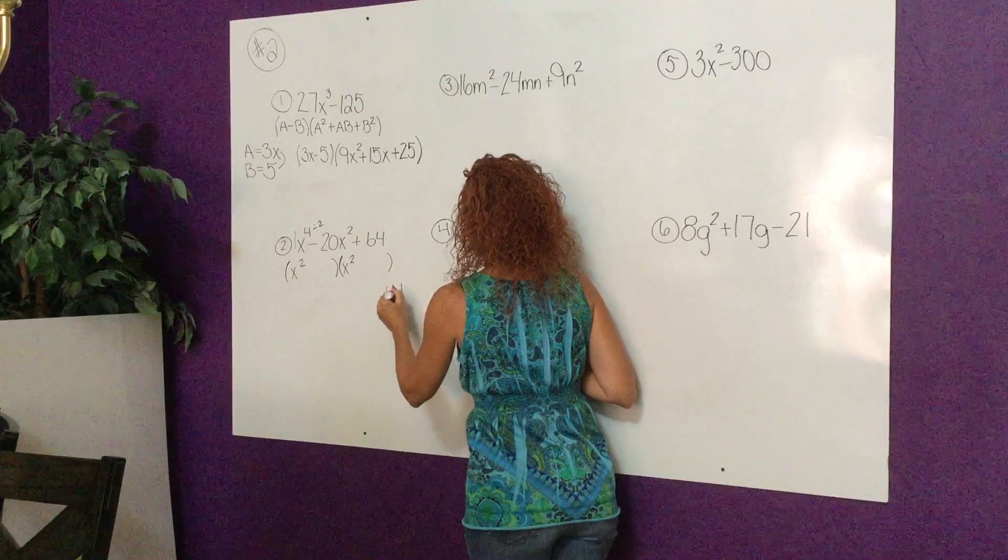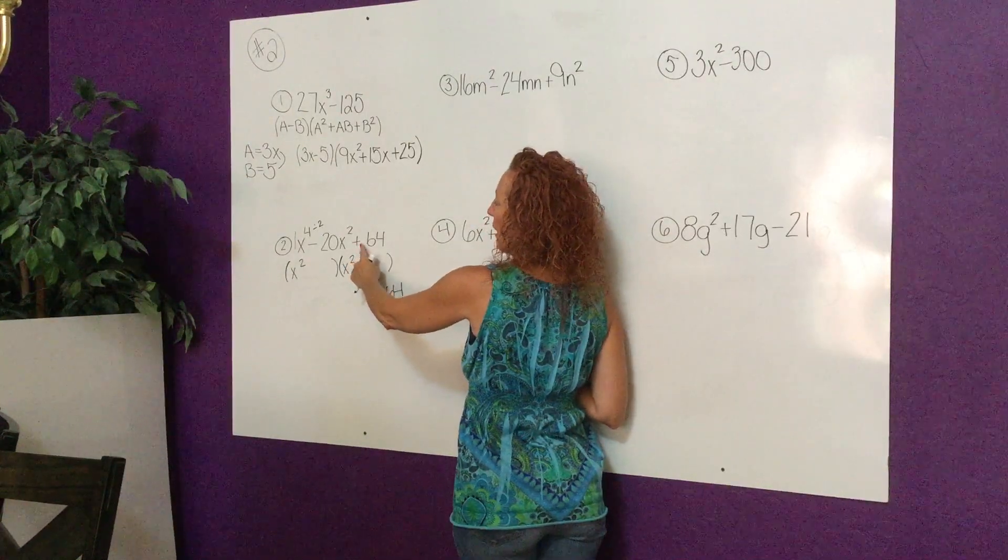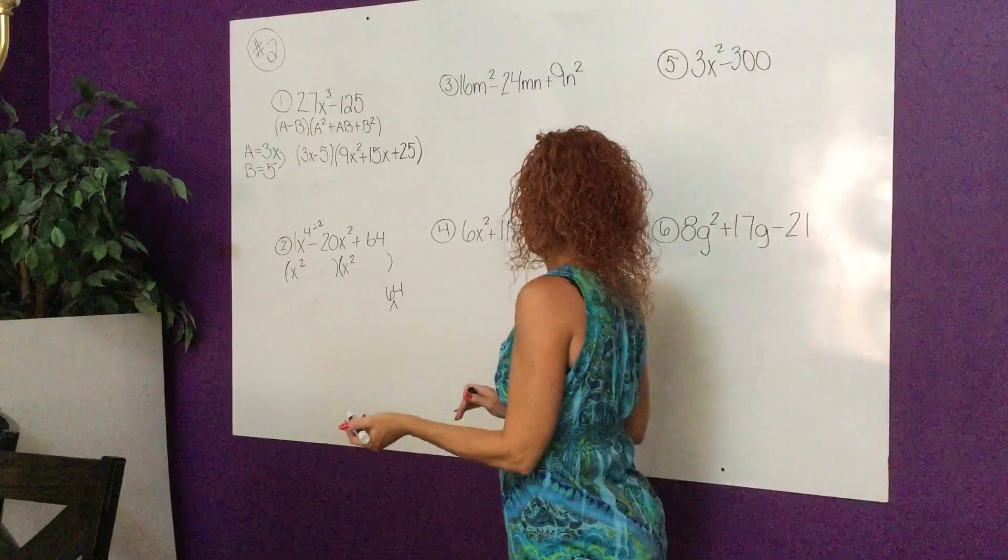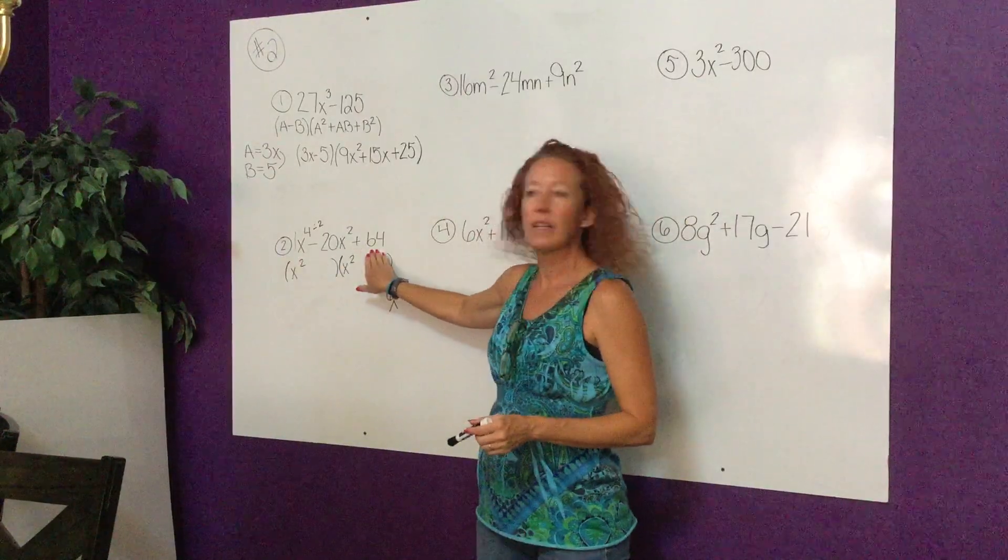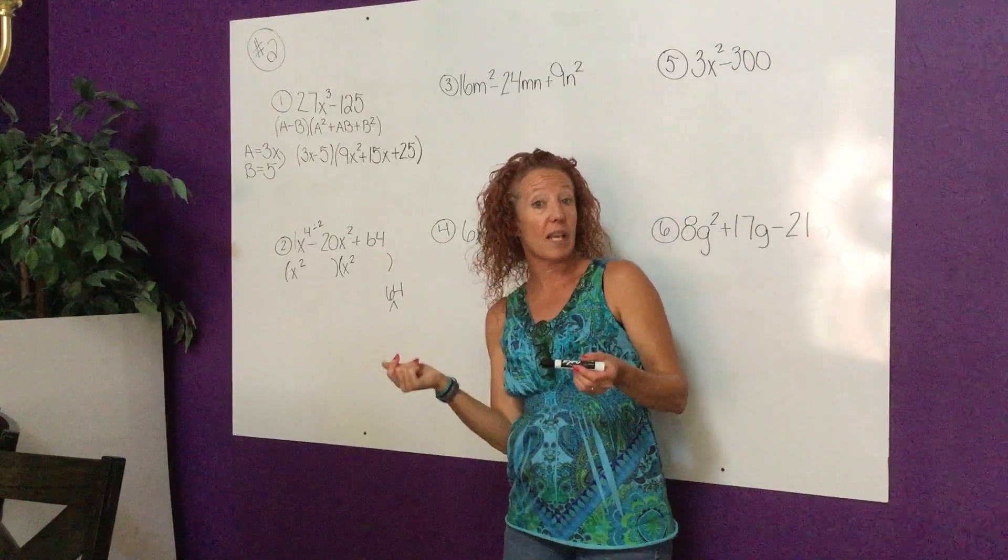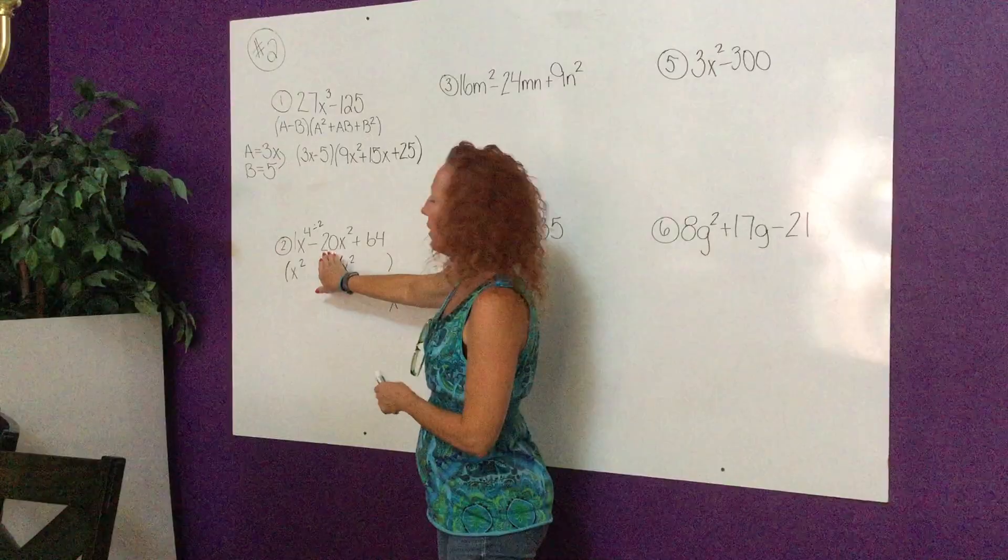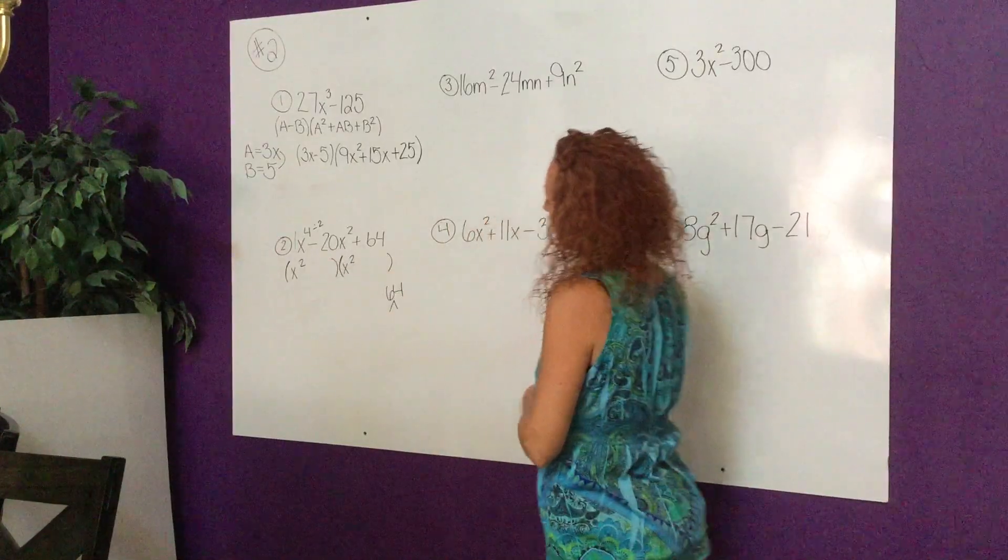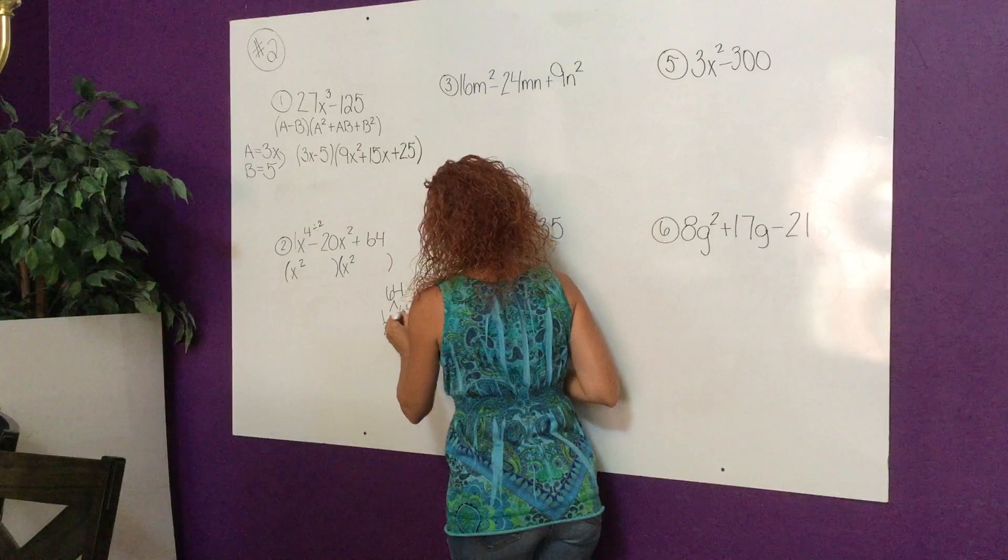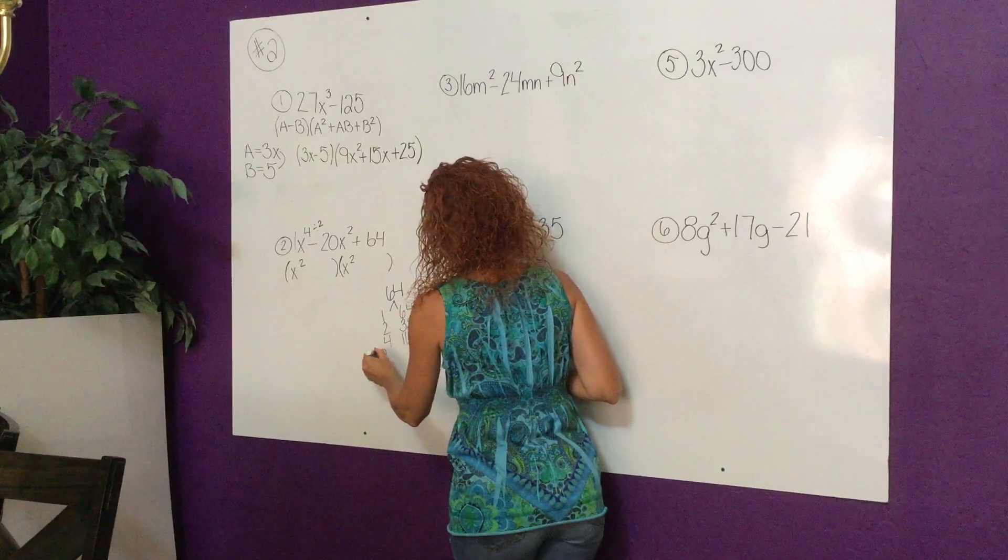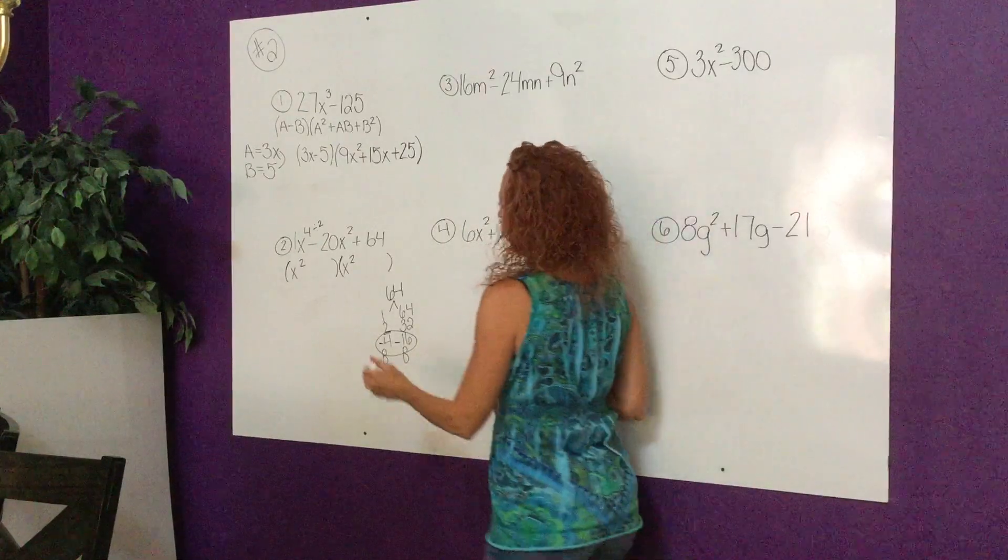What I'm really looking for here, there's no GCF, my leading coefficient is 1, and so what I'm really looking for is two numbers that multiply to 64 but add up to negative 20. Because it multiplies to a positive I know I'm going to have two negative factors. Let's list our factors here and look for things that add to 20, and hopefully you see it's right here. Negative 4 and negative 16.